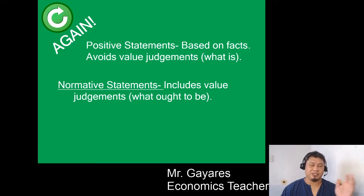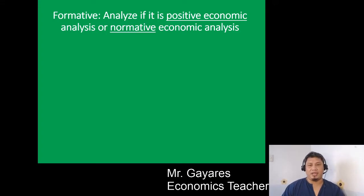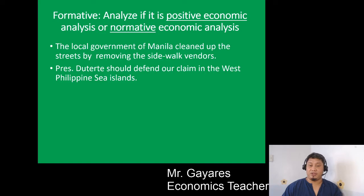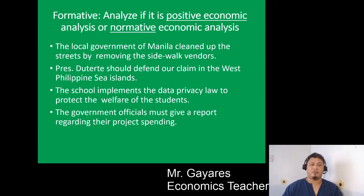Now let's have an example because this will be your quiz number one. You have to identify whether it's positive or normative. Number one: 'The local government of Manila cleaned up the streets by removing the sidewalk vendors.' Number two: 'President Duterte should defend their claim in the West Philippine Sea.' Number three: 'The school implements the data privacy law to protect the welfare of the students.' Number four: 'The government officials must give a report regarding their project spending.' Number five: 'The minimum wage is a bad law.'